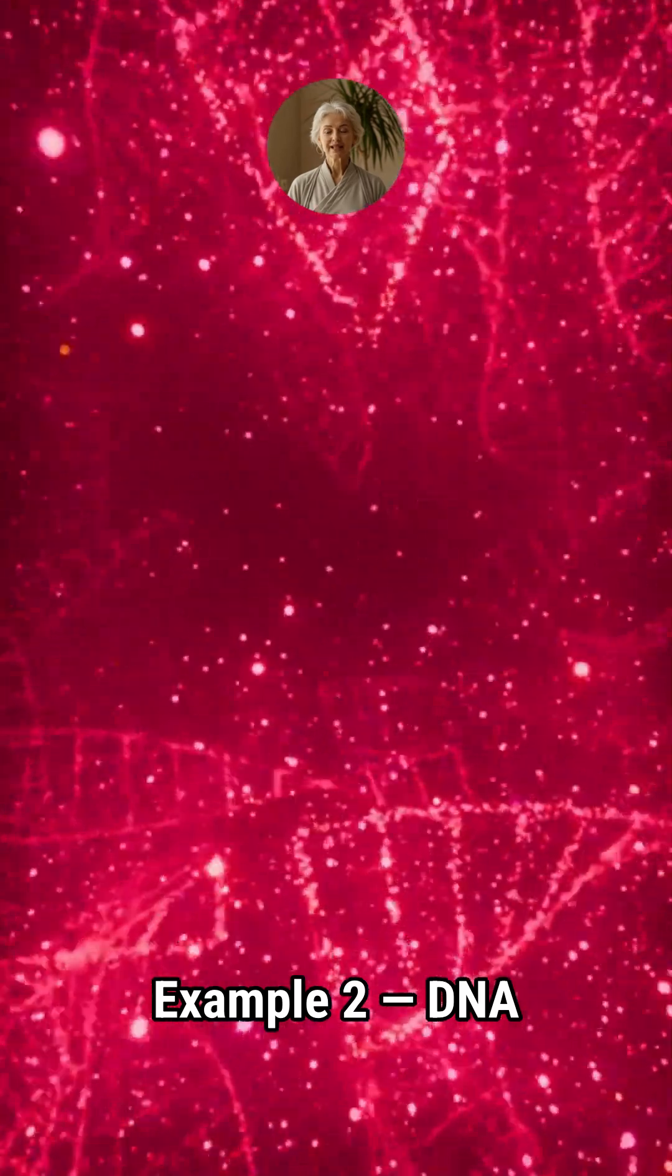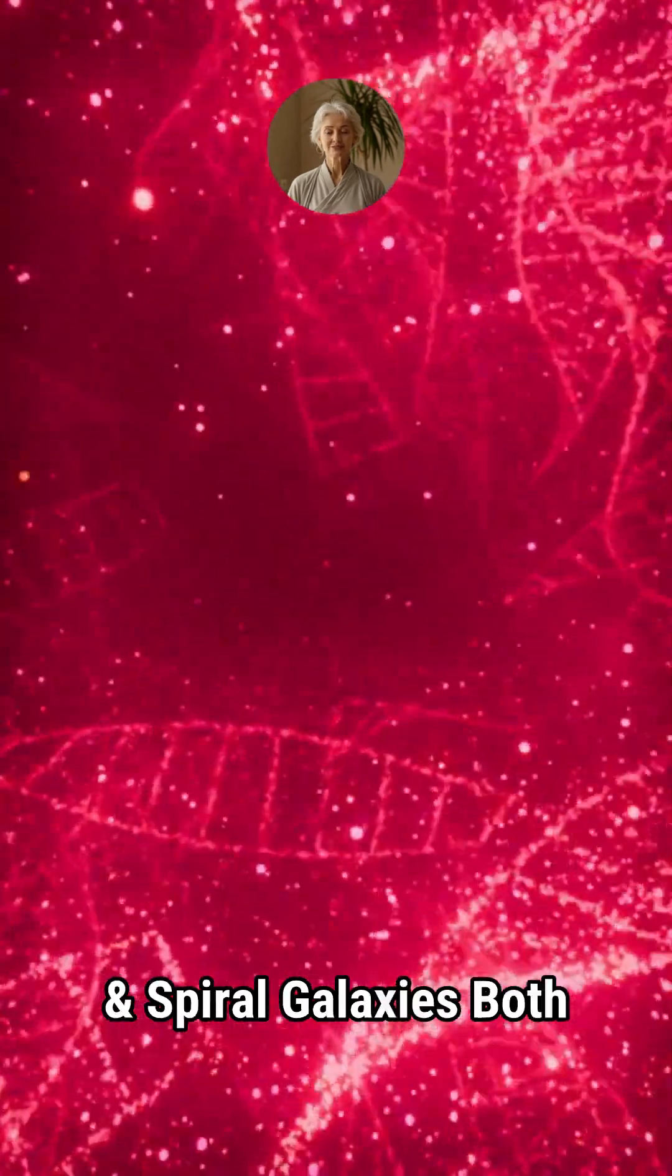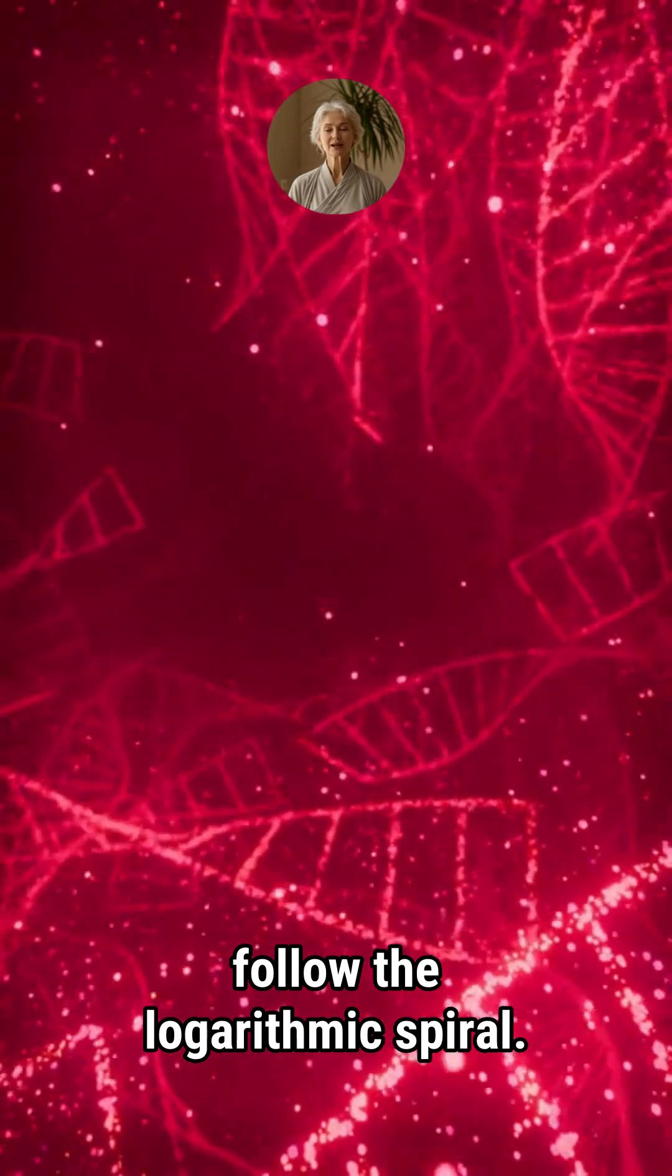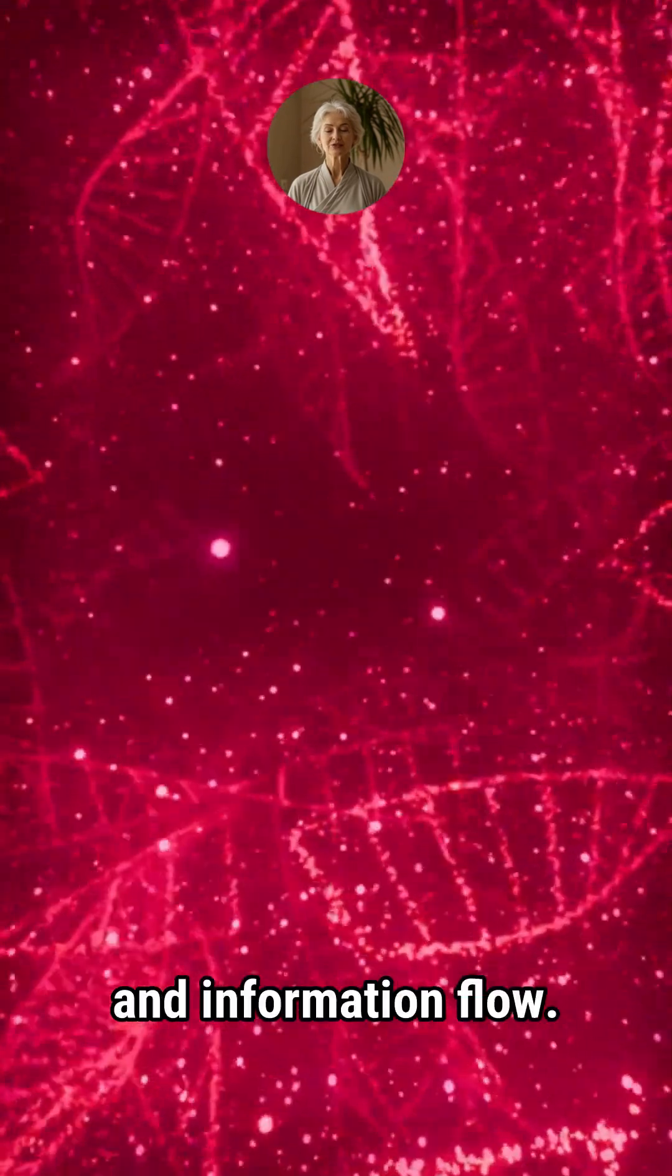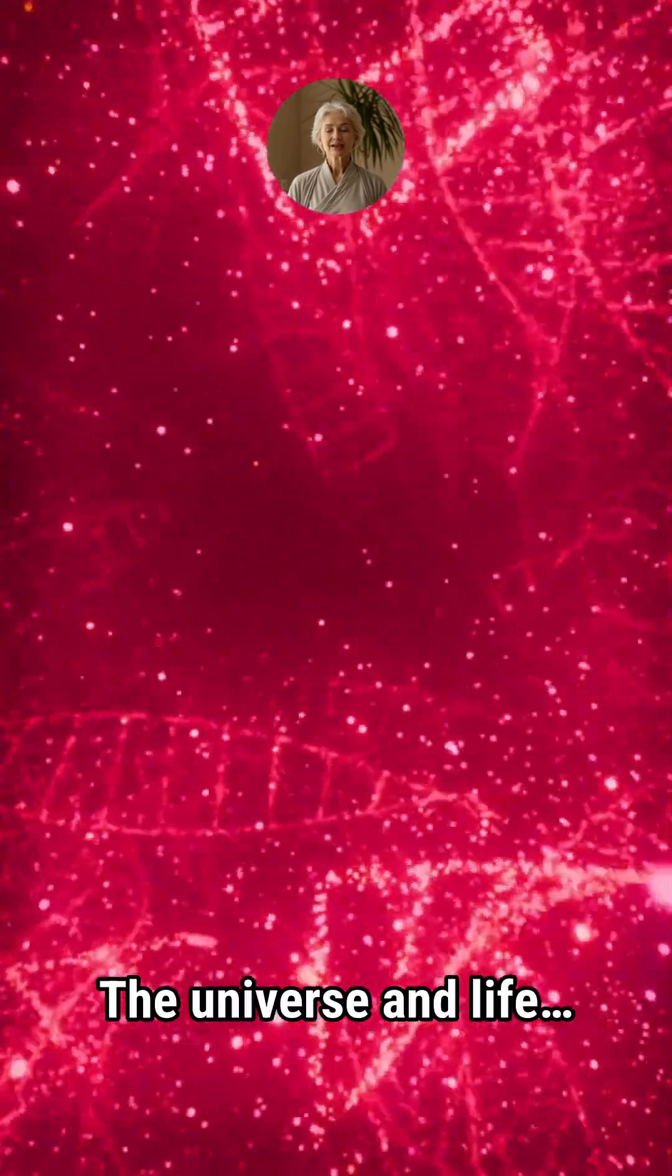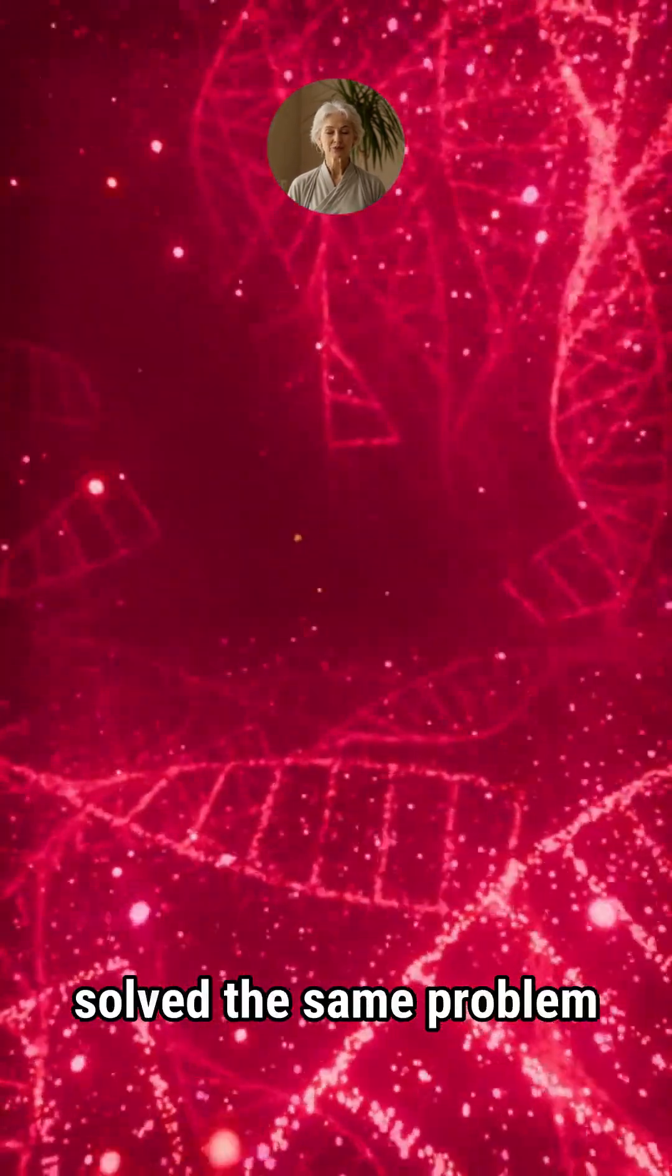Example 2. DNA and spiral galaxies. Both follow the logarithmic spiral, a structure optimized by nature for growth, survival, and information flow. The universe and life solved the same problem in the same way.